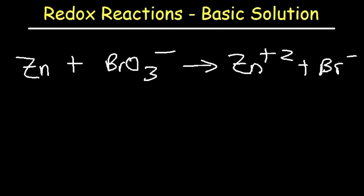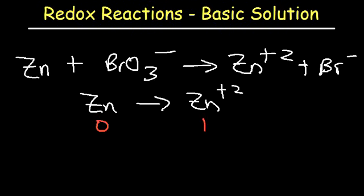Let's start with zinc. Zinc is going to convert into the zinc 2+ cation. The number of zinc particles are already balanced — we have one zinc particle on each side. So we need to balance the charge. The charge on the right side is +2, but the charge on the left side is 0. The difference is 2, so we need to add two electrons to the side with the higher charge — the right side. The net charge on both sides will then equal 0.